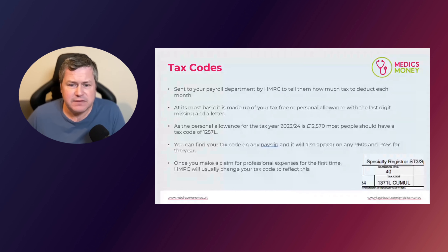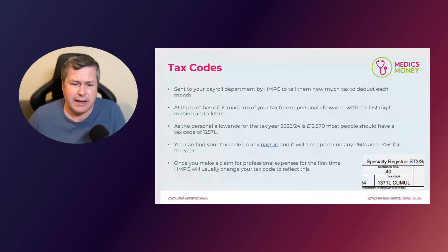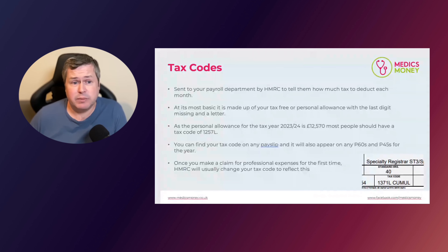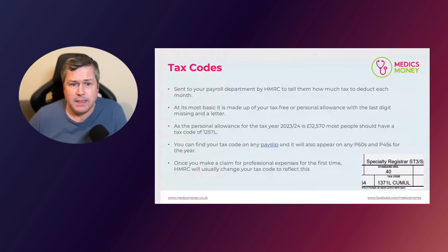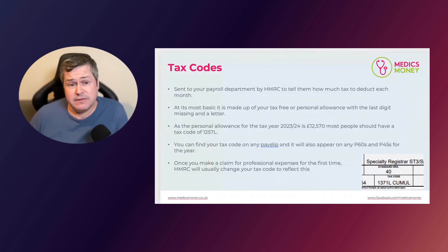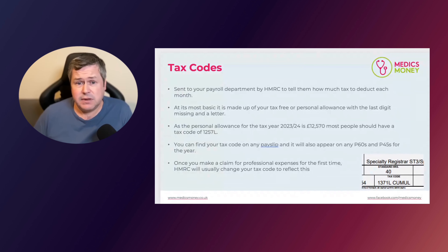The 1257 might be decreased to take underpayment into account, and you'll then pay extra tax each month. The lower the number, the more income tax you'll pay each month. Some people may also have a lower number because they have employee benefits in kind, such as private medical insurance or company cars, and this is how HMRC collects the tax due on those. These are unlikely to be relevant to healthcare professionals, but you may have friends, family or partners who are affected.